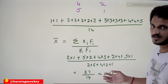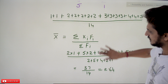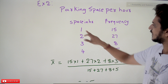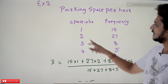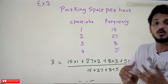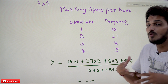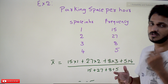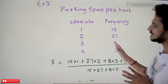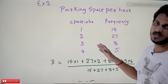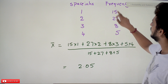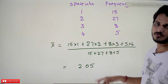Let's look at one more example: parking space duration. 15 members parked for 1 hour, 27 members for 2 hours, 8 members for 3 hours, and 5 members for 4 hours. To find the average parking duration, we calculate: (15×1 + 27×2 + 8×3 + 5×4) / (15+27+8+5) = 2.05.